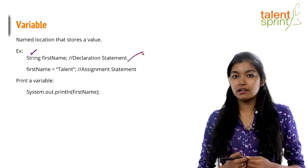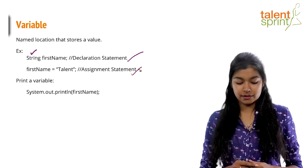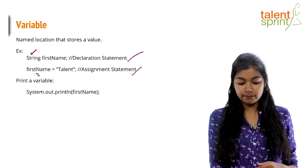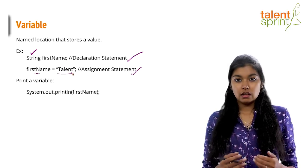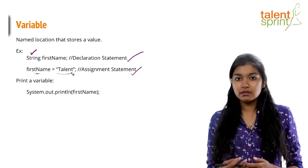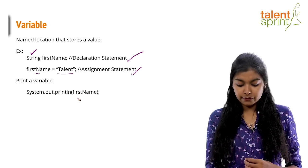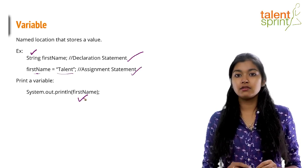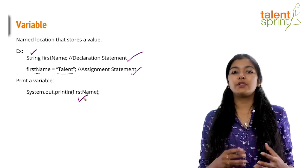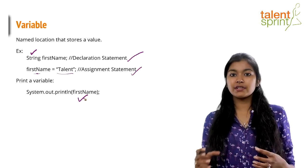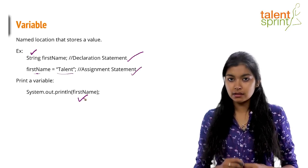When you want to assign a value to your variable, that is called an assignment statement — you give the variable name and the value it is going to hold. When you want to print a variable, you use System.out.println, but when you give the variable name inside, you don't have to use quotes. As you remember from our previous program, when we printed a string directly we used quotes, but when printing a variable name, it doesn't have to be inside quotes.